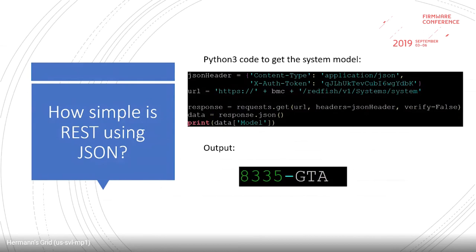How simple is REST using JSON? This is a Python 3 example — five lines of code — using token authorization, and it's getting the system model. This isn't much different than calling the Google Maps, Twitter, or Facebook API.